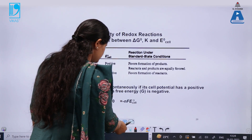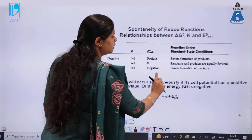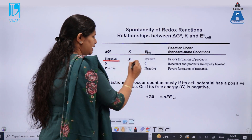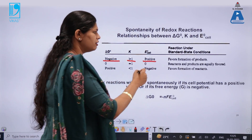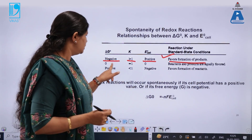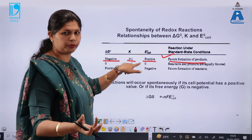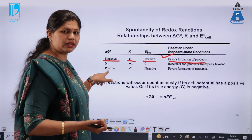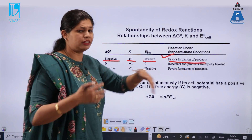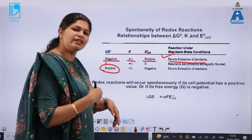The criteria of spontaneity: if ΔG is negative, K is greater than 1 and E° will be positive, meaning it favors formation of products. When ΔG is zero, both are in equilibrium. When ΔG is positive, E° is negative, favoring the formation of reactants — the forward reaction is non-spontaneous but the backward reaction is spontaneous.